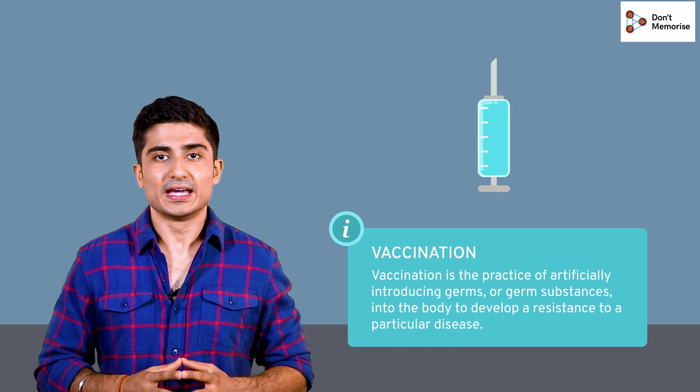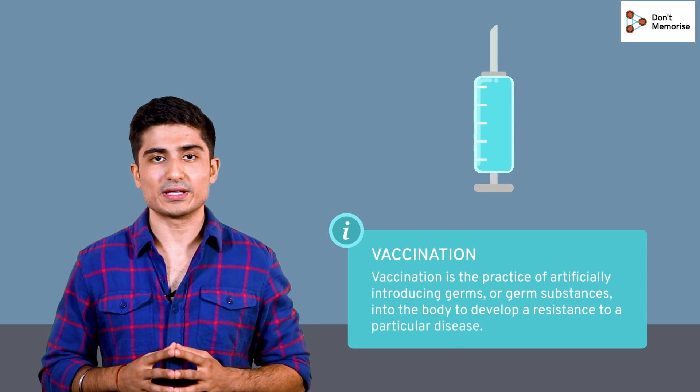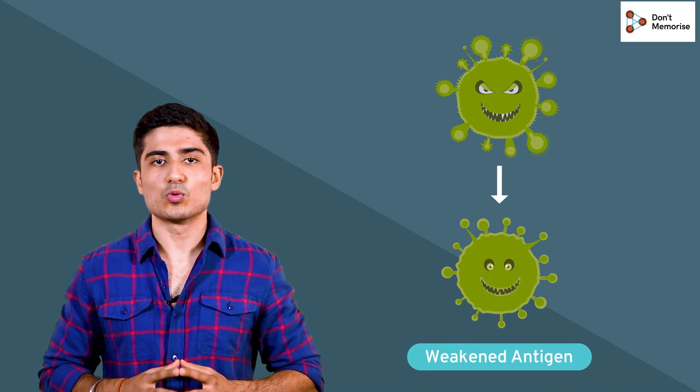The material that is introduced to the body is called the vaccine. Vaccines are made of killed germs or viruses of a disease. They may also use a weakened antigen or a very tiny quantity of the antigen that will not make you sick.